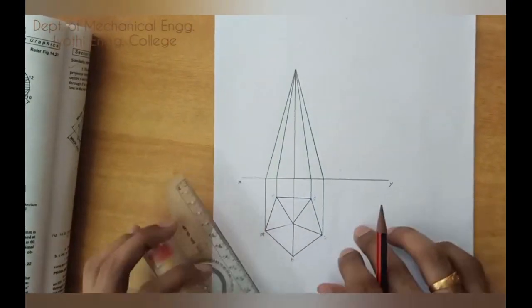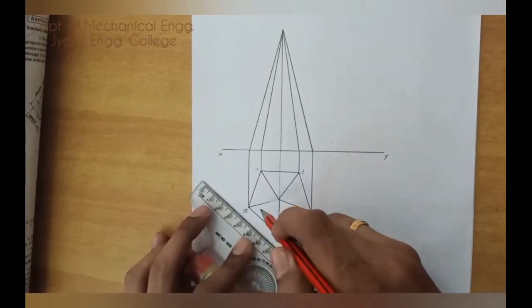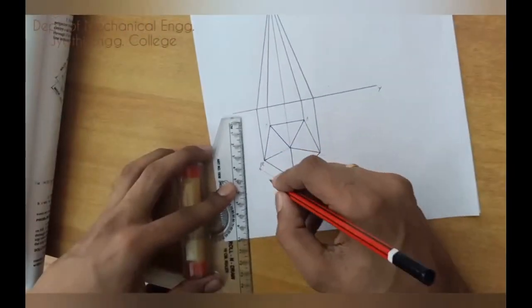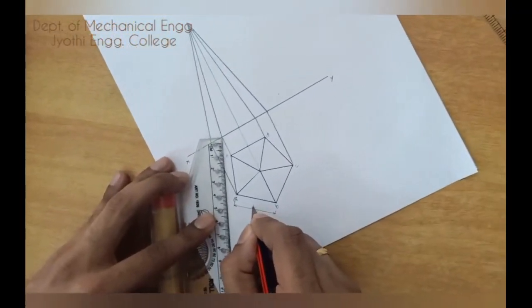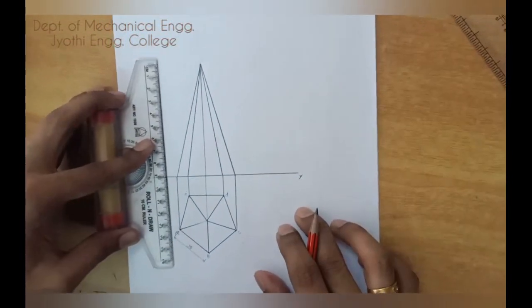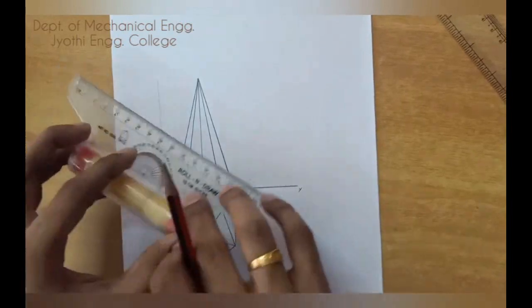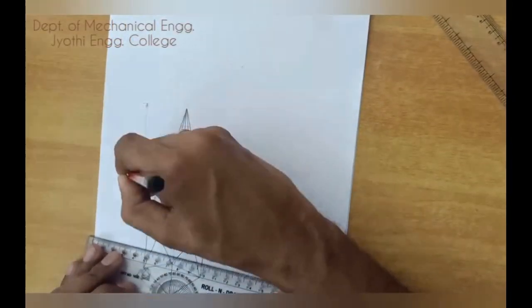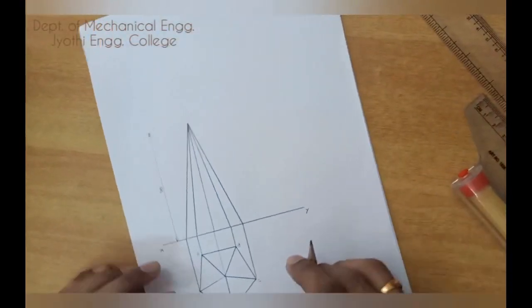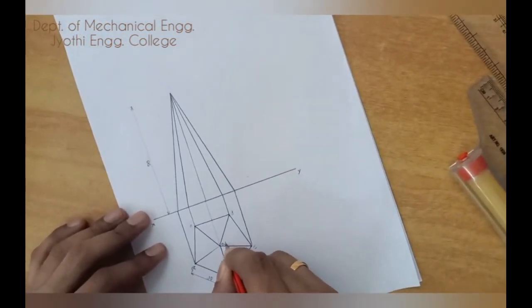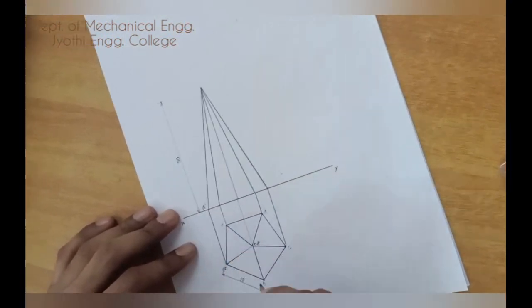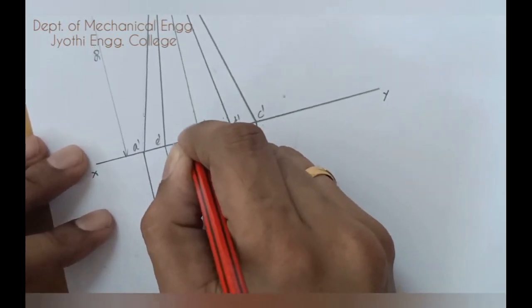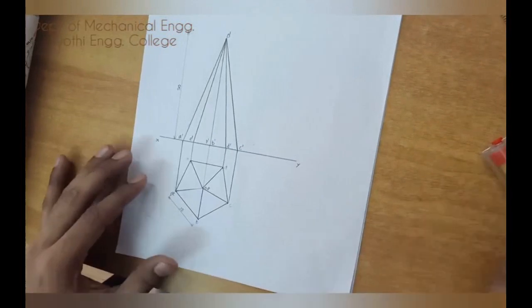The front view and top view is over and you can mark the dimension 30 and also height of the pyramid. Also you can complete the names, this is O, E, so A, A dash, B, B dash, C, C dash, this is D dash and this is E dash, here B dash axis O dash.